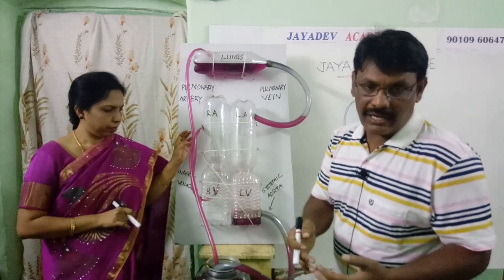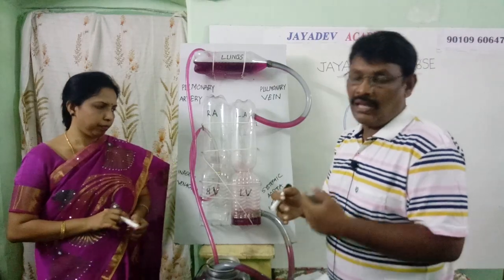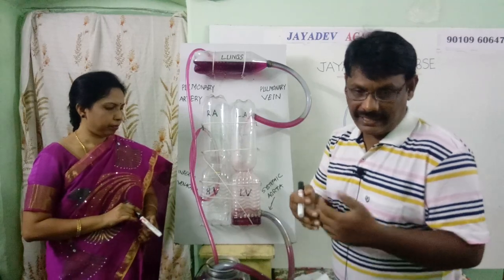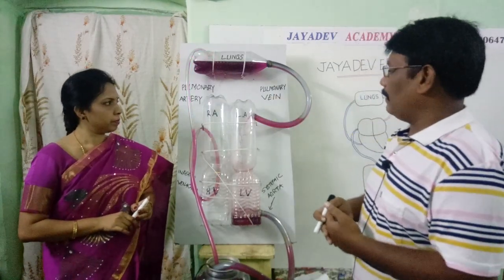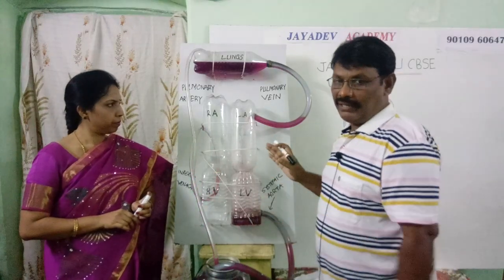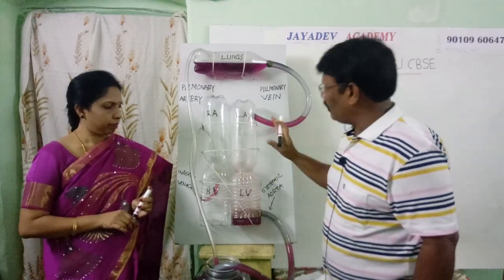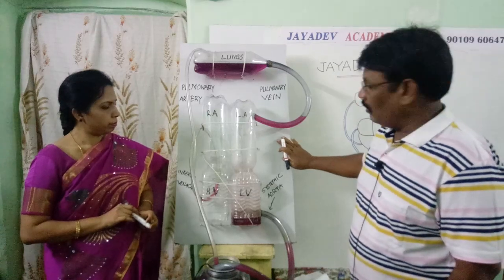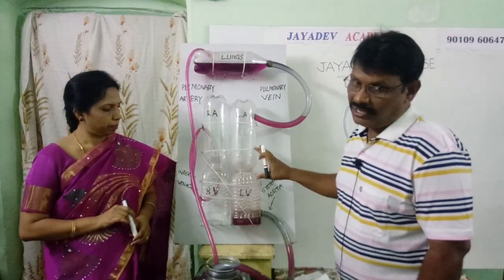That's why it is named the circulatory system — the blood always pumps into the lungs from the heart for purification. Children, have you understood this working model? I think you have understood about this working model. Simply here, we took one wooden plank. We have fixed domestic articles which are available in our home.